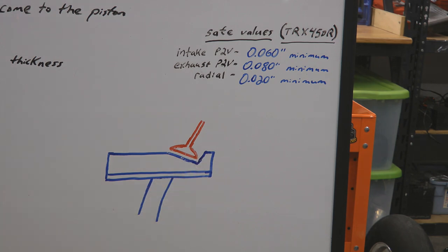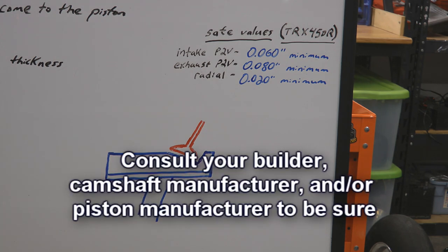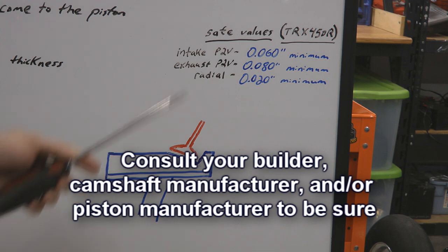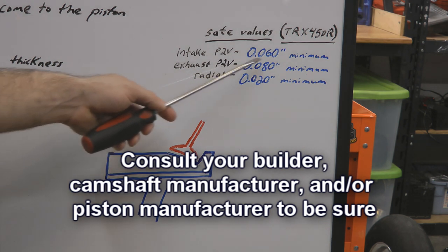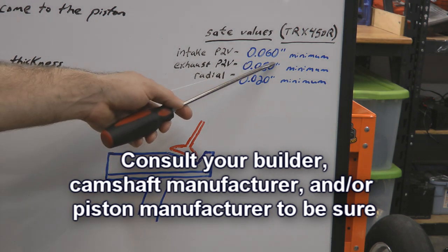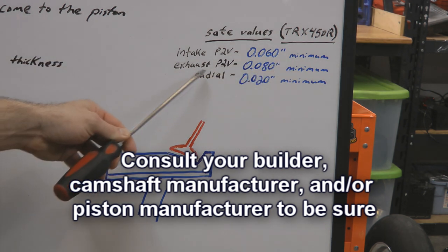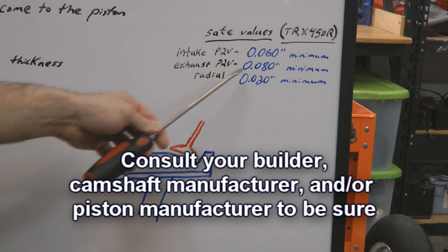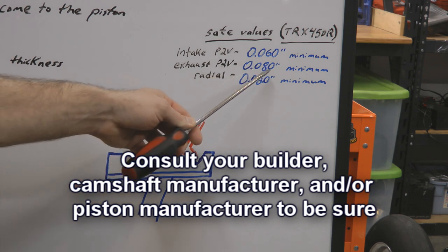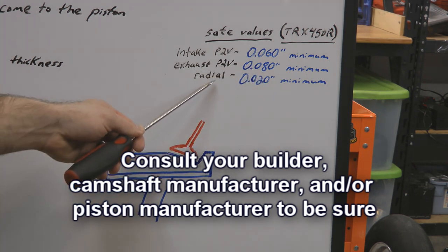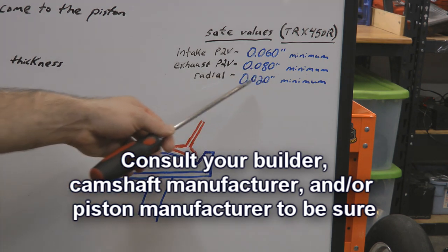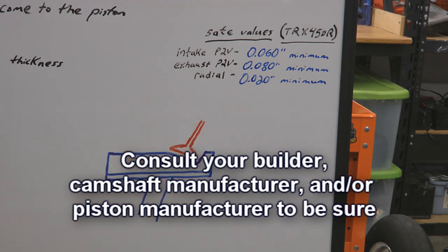Safe values for a 450cc based four-stroke engine, specifically the Honda TRX 450R: the intake piston to valve clearance is 60 thousandths minimum, the exhaust piston to valve clearance is 80 thousandths minimum, and the radial clearance is 20 thousandths minimum.